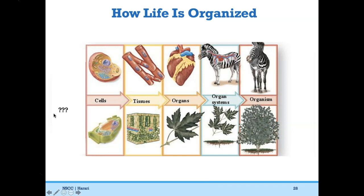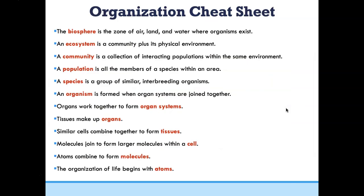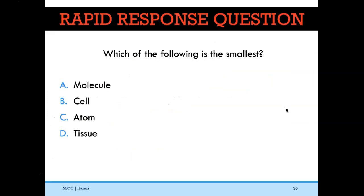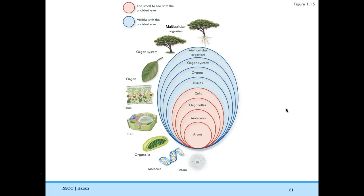Pause here to test your understanding of how life is organized. Which of the following is the smallest? The answer is C, an atom. Atoms, molecules, organelles, and cells are all in red because these are too small to see with the unaided eye. Everything in blue — tissues, organs, organ systems — we could see without a microscope.